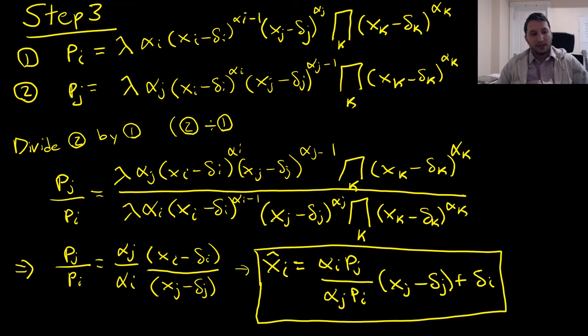We're then going to proceed to divide two by one and get the following results. We'll just close that little bracket here. Let's clean this up a little bit. We're going to knock off our Lambdas here.